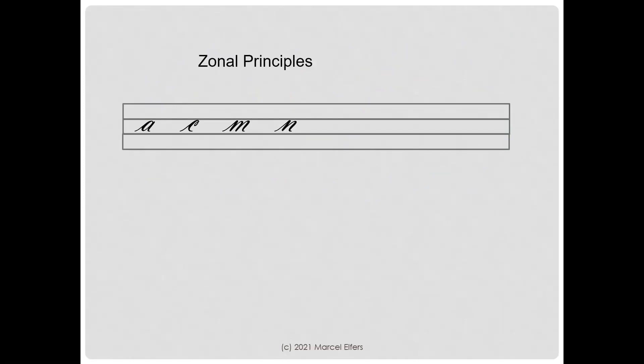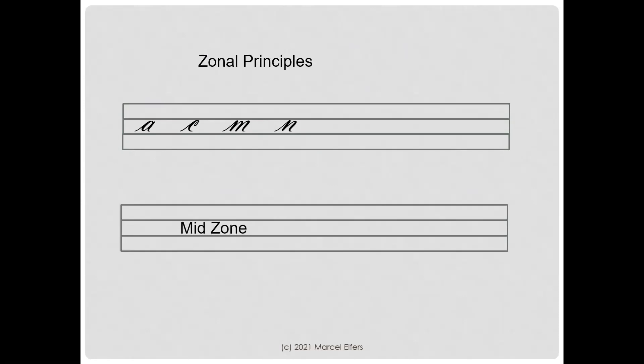The three zones, or the zonal principles, are shown here. This is the mid zone. Letters like A, C, M, N, O, Q, etc., are located in the mid zone. Anything above the mid zone is called the upper zone — of course, the body of the B is still in the mid zone. Anything below the mid zone is called the lower zone.